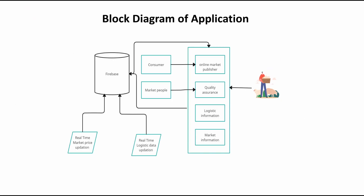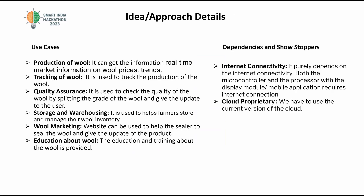This is the schematic diagram of monitoring of wool from farm to fabric. Use cases: Production of wool — it can get real-time market information on wool prices, trends, etc.